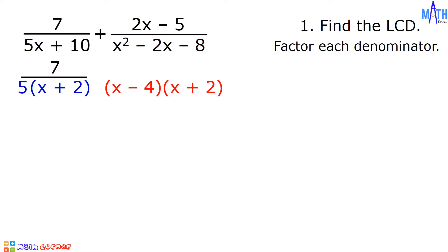Let us rewrite 2x minus 5 over x squared minus 2x minus 8 as 2x minus 5 over quantity x minus 4 times quantity x plus 2.